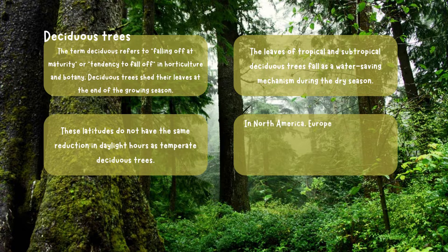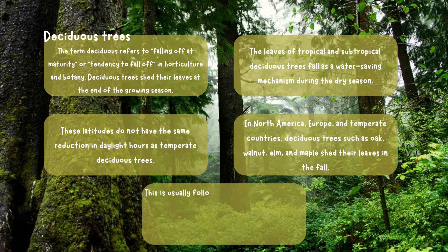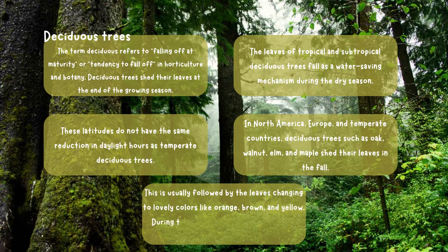In North America, Europe, and temperate countries, deciduous trees such as oak, walnut, elm, and maple shed their leaves in the fall. This is usually followed by the leaves changing to lovely colors like orange, brown, and yellow.